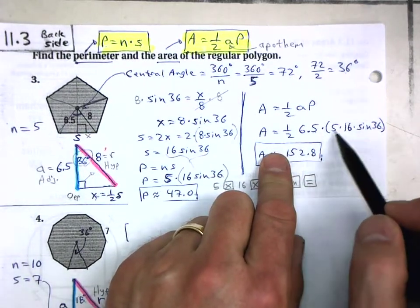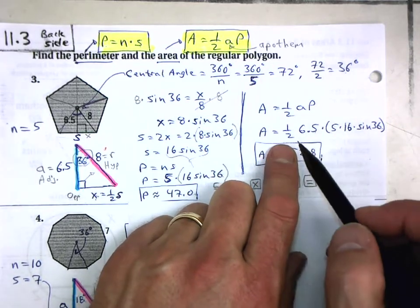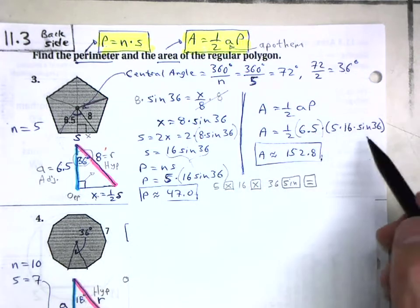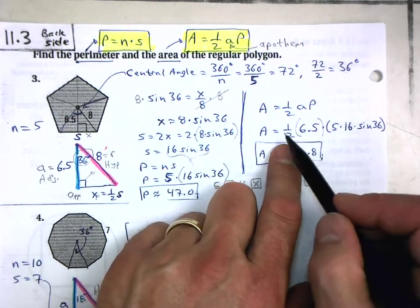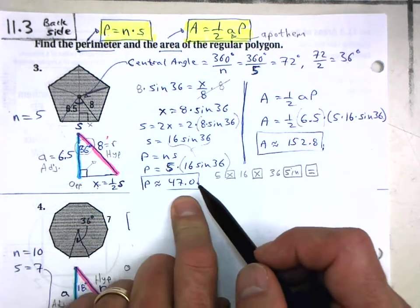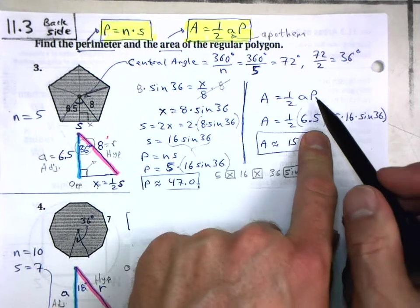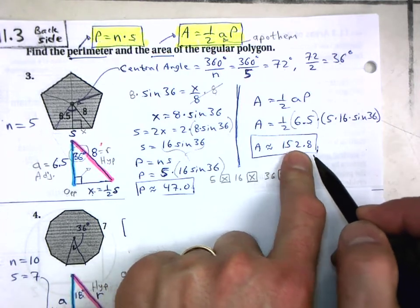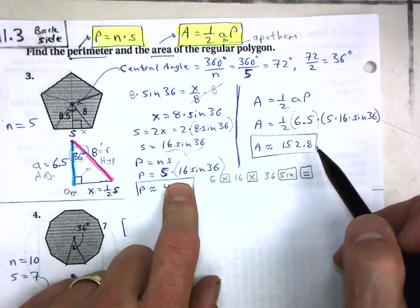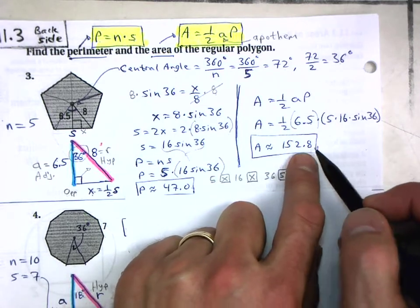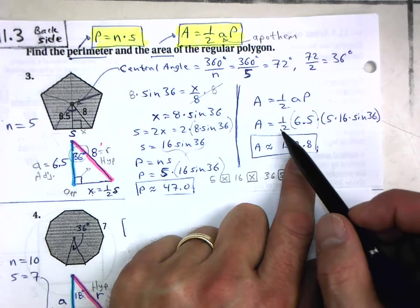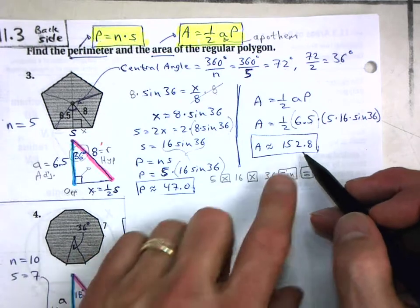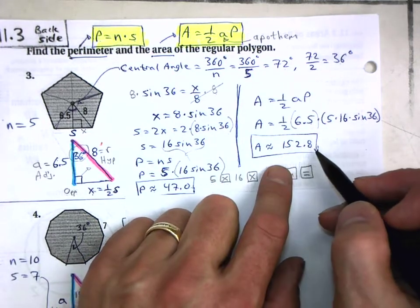When I plug in the apothem length of 6.5 and the perimeter of 5 times 16·sine(36), here is my final formula. Don't deform a number and then use that poor deformed number in your next equation, because you'll get an even more deformed answer. The correct answer is 152.8. So make sure you don't use the calculator until the very end. If you plug everything in, the area is approximately 152.8.